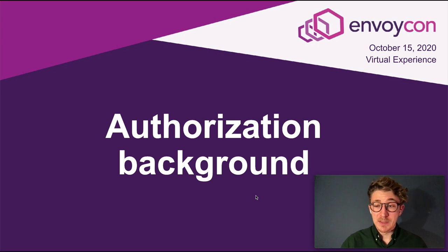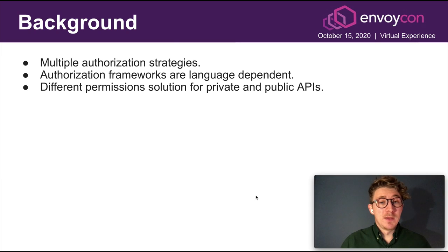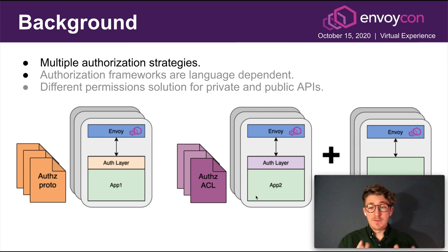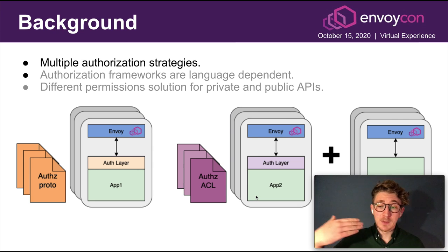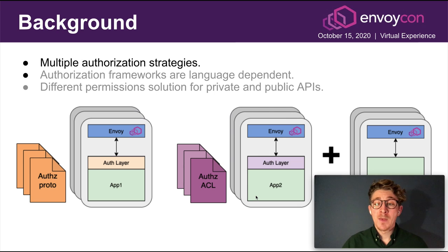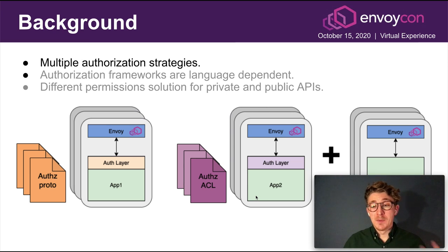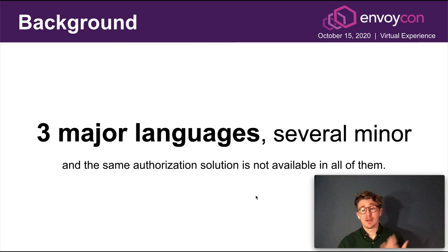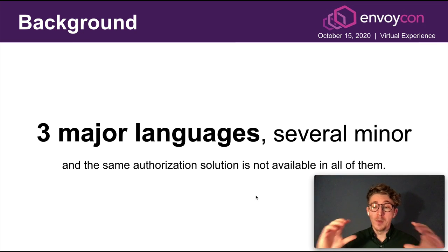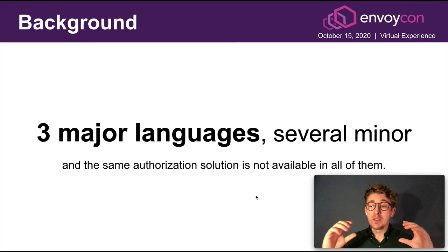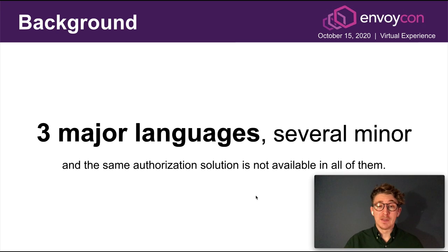Now a quick overview of how we used to do authorization at Square. We had multiple authorization strategies — services could implement or leverage different libraries to do authorization. Some were using Protos; others like Safe had ACL-like files where you could specify different rules and authorization requirements; while a third set of services used custom code with no additional library, written directly in the application layer. Square supports three major languages, several minor, and the same authorization solution is not available in all languages — meaning if you have microservices written in different languages, you may not be able to leverage the same authorization solution for both.